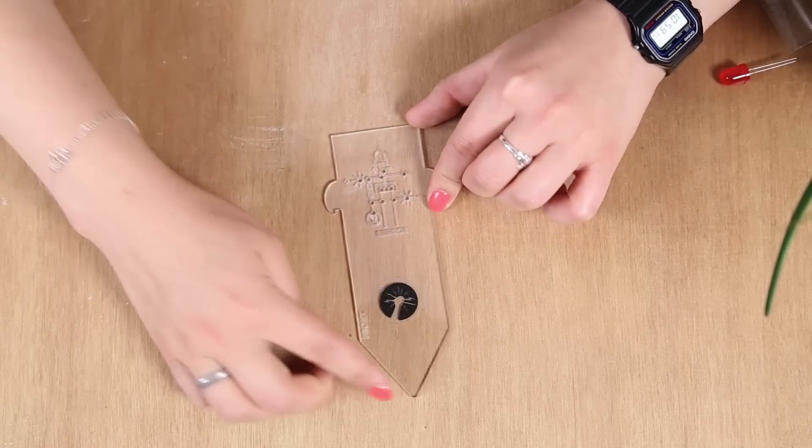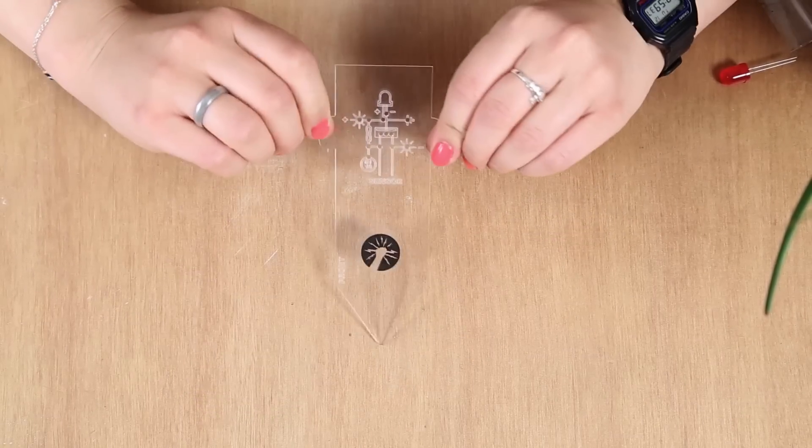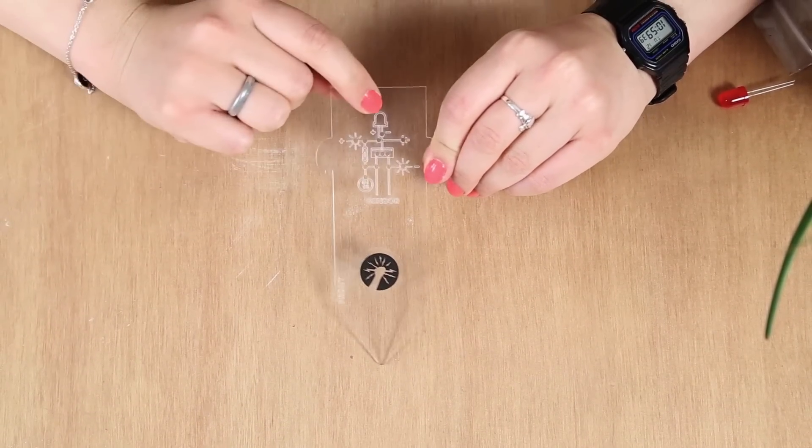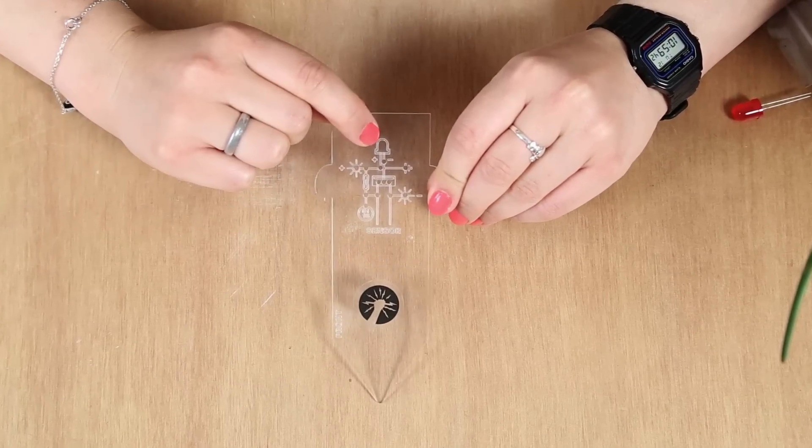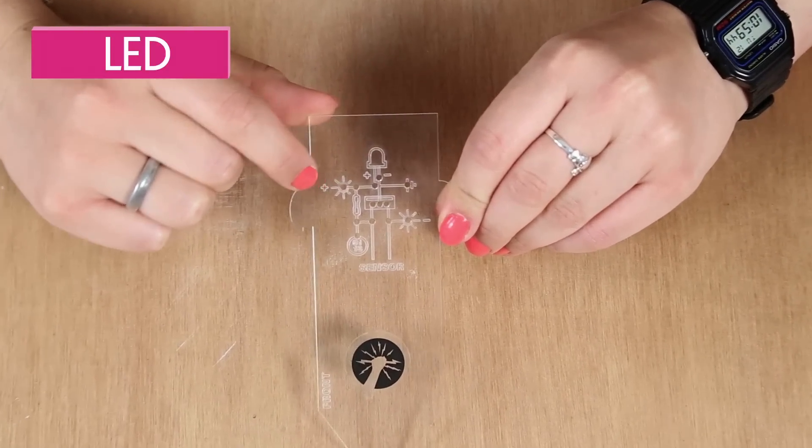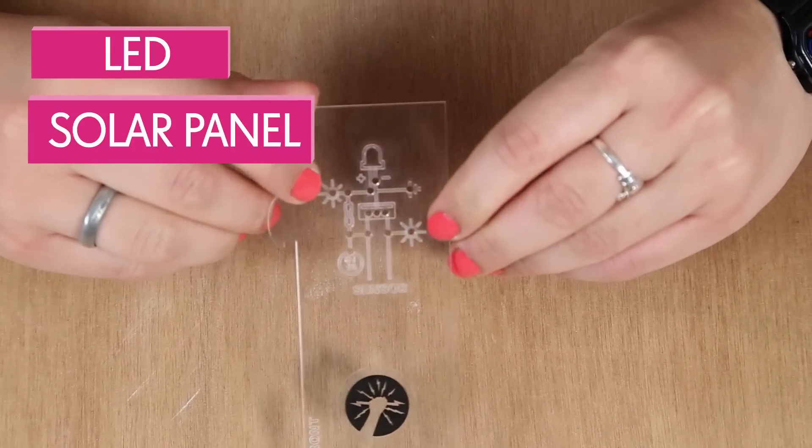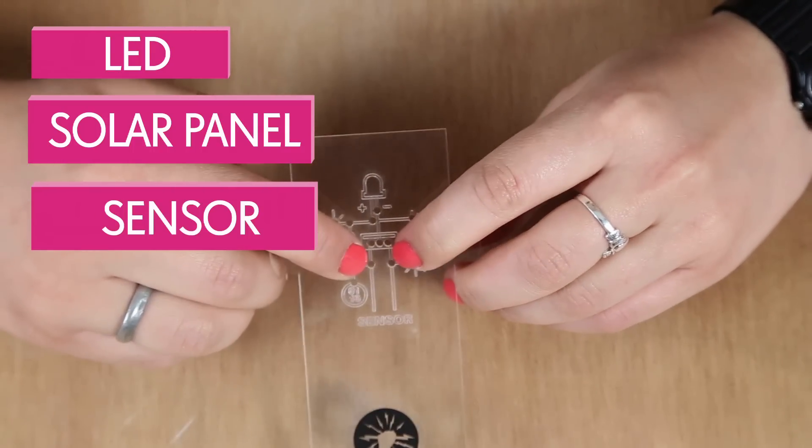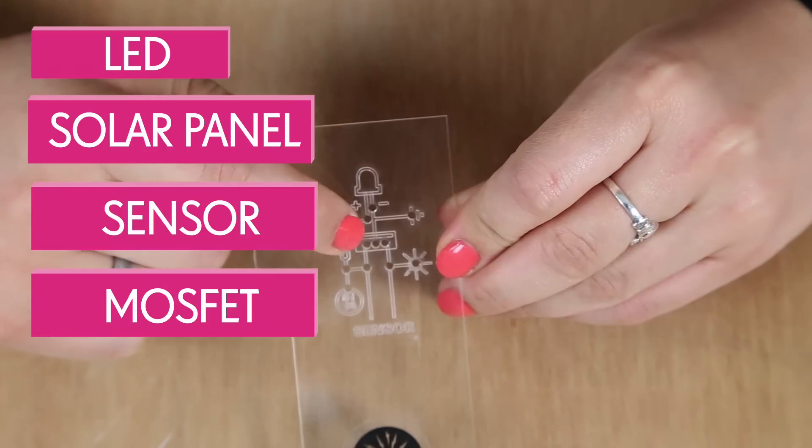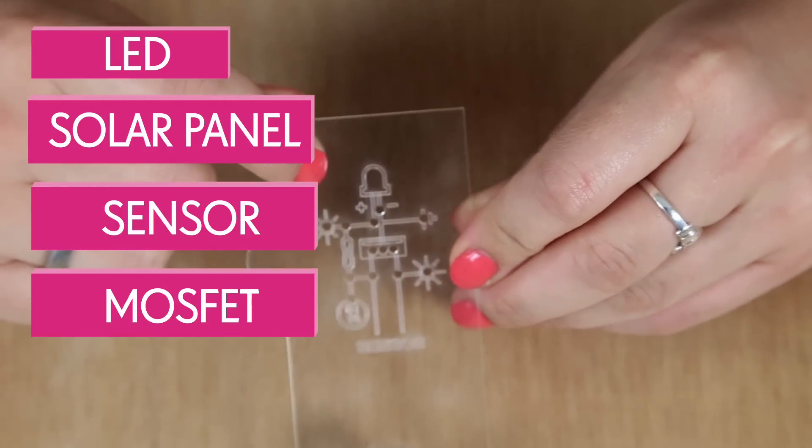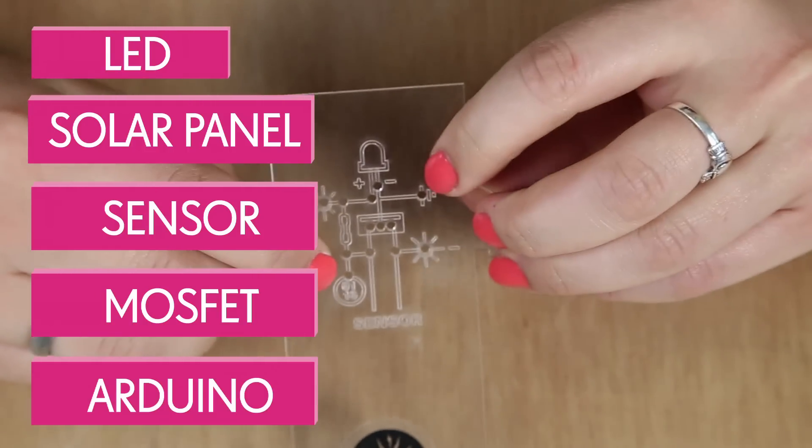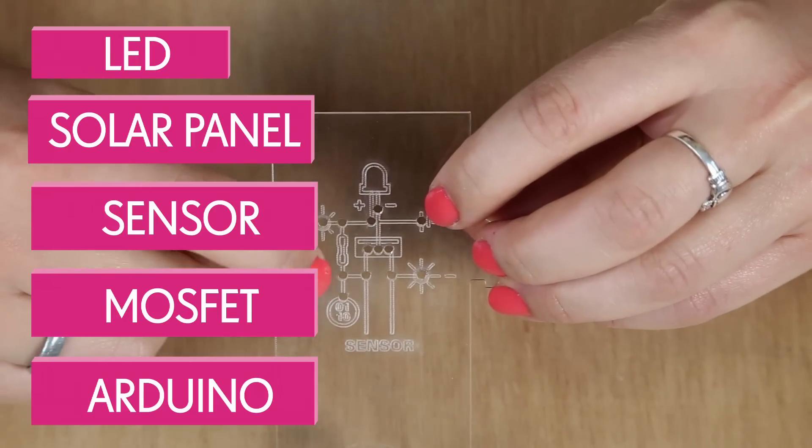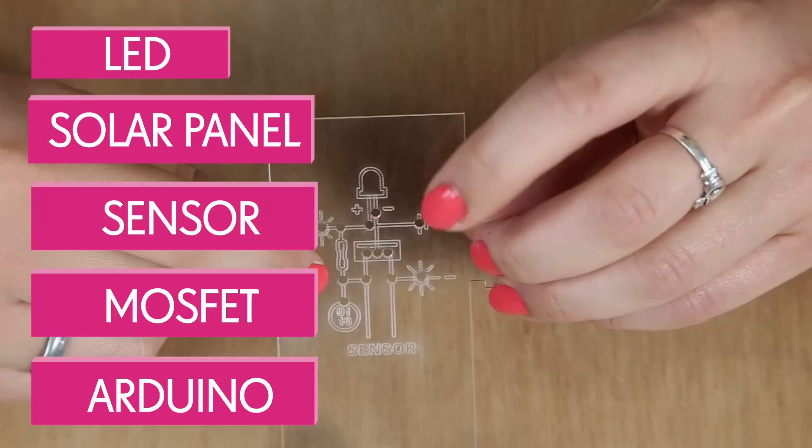So this is the acrylic marker that you get in the box. So it has the circuit written on for you. And the little symbols symbolize the different components. So this is the LED. This is for the solar panels, these little sun signs. These are for your sensor. And then a MOSFET. And these two are for the Arduino. So that's new for the new Thirsty Plant, the facility to put Arduino into it.